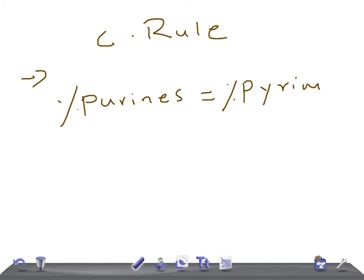So, it's simple. Percentage of A equals percentage of T or U, okay, if it's RNA. And percentage of G equals percentage of C. That's a simple rule and very easy to understand.